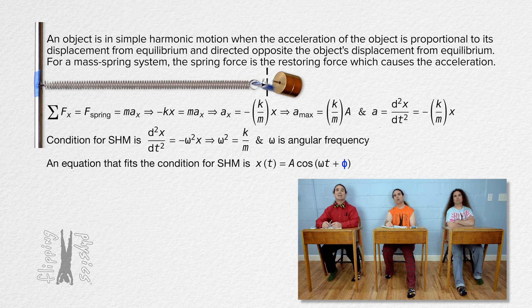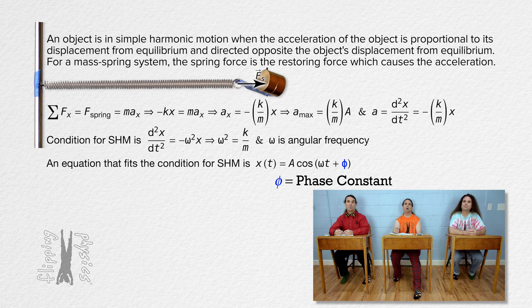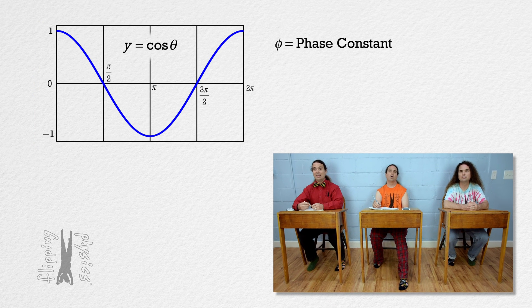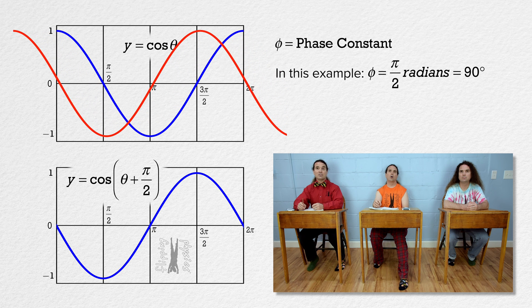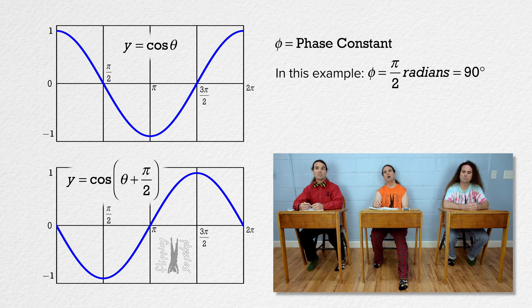Phi is the phase constant or the phase shift for the wave. For a simple example, we can look at the graph of y equals cosine theta with theta in radians and compare that to the graph of y equals the cosine of the quantity theta plus a phase constant of pi over 2 radians. You can see that the cosine graph is phase shifted to the left by pi over 2 radians, which is also 90 degrees. That is what the phase constant does — it shifts the location of the cosine or sine wave along the horizontal axis.